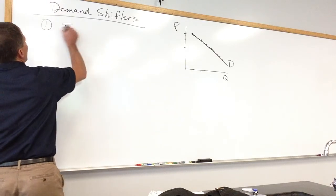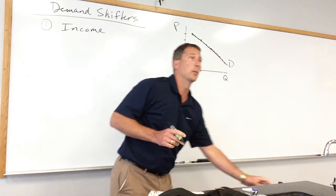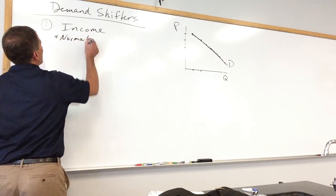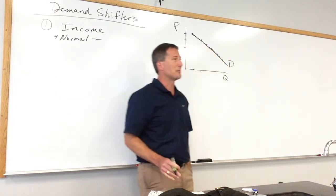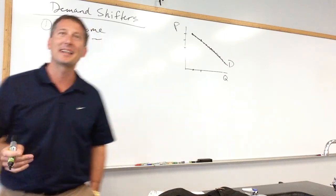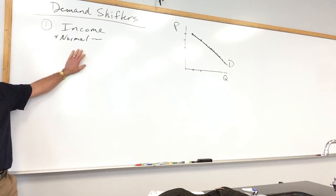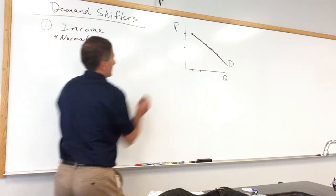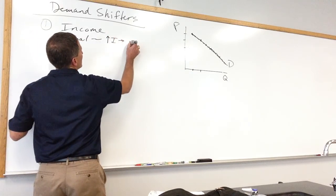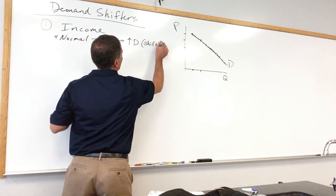We started our list with income. Income had two cases: normal goods and inferior goods. Normal good meant what? What's the normal case between income and the quantities of stuff you want to buy? Income goes up, demand goes up — shifts to the right. So an increase in income leads to an increase in demand. My notation here is an up arrow with demand, which means a shift to the right.